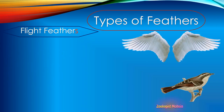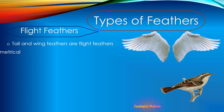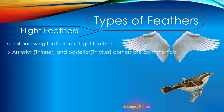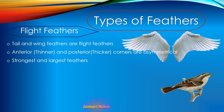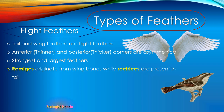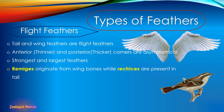Next type is flight feathers — tail and wing feathers are flight feathers. The anterior part of these feathers is thinner while the posterior part is thicker, so they are asymmetrical. They are the strongest and largest feathers, also called the hardest. Remiges originate from wing bones, while rectrices are present in the tail. These are the two names given to wing feathers and tail feathers respectively — both are flight feathers.